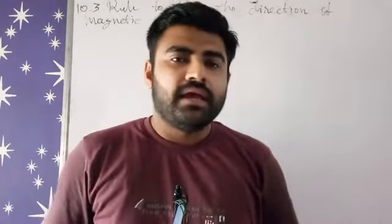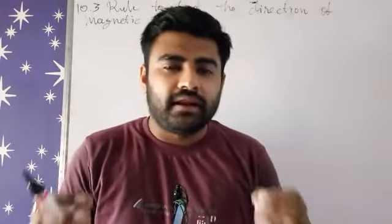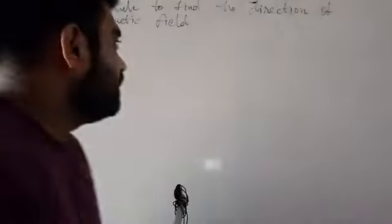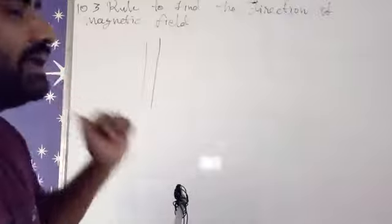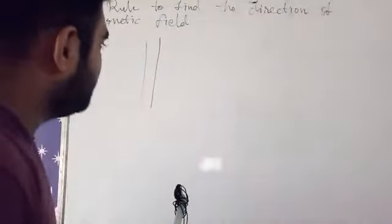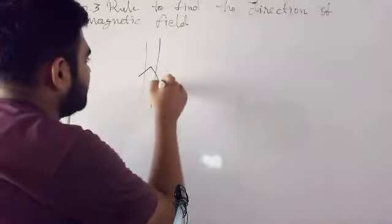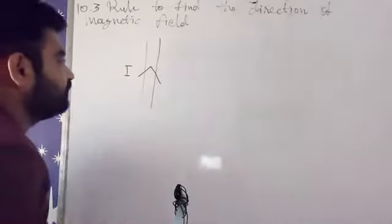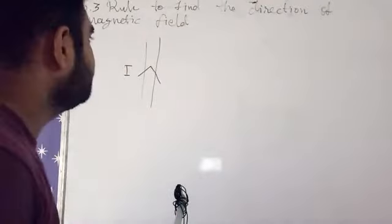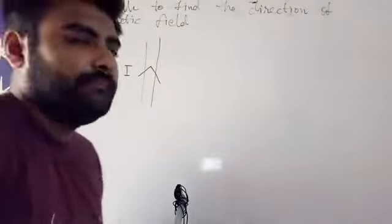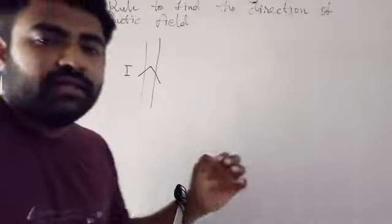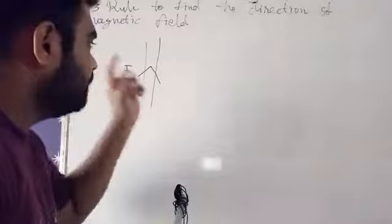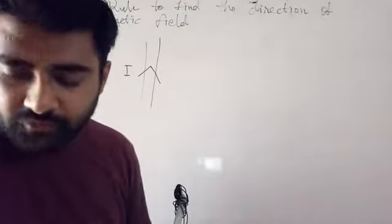Basically we have to just apply right hand thumb rule. Now if our conductor is situated in vertical direction, this is our conductor, and the current flow direction is in upper direction. To find this magnetic field, we apply right hand thumb rule. Suppose this is our conductor and current is flowing in this direction.